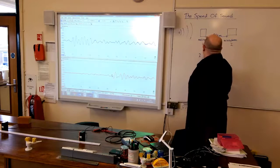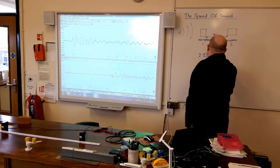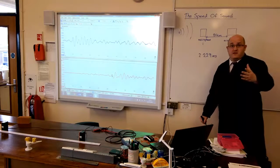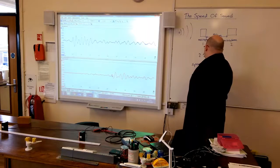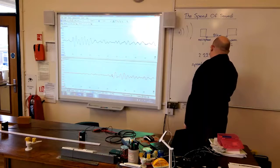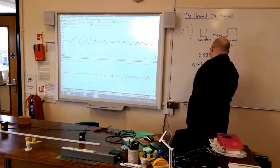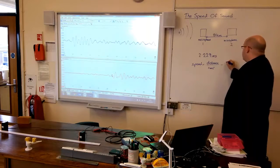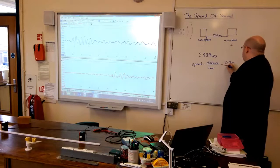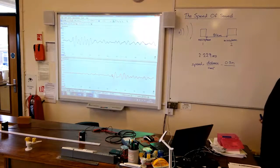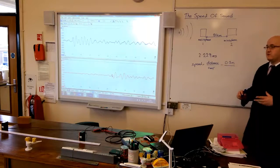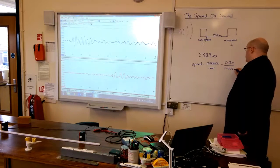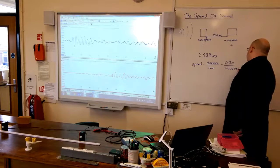So, it took 2.229 milliseconds to travel that distance. Now, if you remember back to year 8 physics, speed equals distance divided by time. Now, I'm going to convert these. We've got 80 centimeters, and 80 centimeters is 0.8 meters. I've got 2.229 milliseconds. Now, a millisecond is a thousandth of a second. So, if I divide that by a thousand, that's 0.00229 seconds.